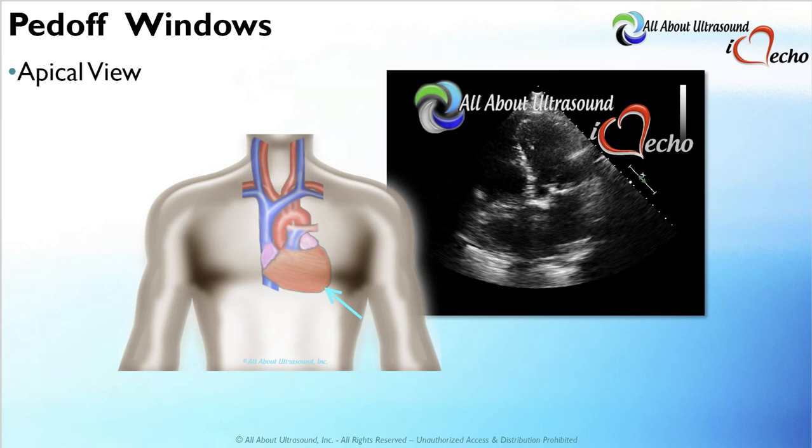PEDOF windows can be easily obtained with practice. The most common, and usually the easiest to obtain for most sonographers, is the apical view. The best positioning for this is the left lateral decubitus, same as you would obtain your apical images, such as your four-chamber and five-chamber views on 2D echocardiography. The patient's left arm should be positioned up and out of the way, with the right arm resting on the patient's side. Best access is usually obtained with an echo imaging table that has a dropout section for easy access to the apical window.